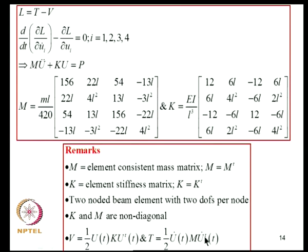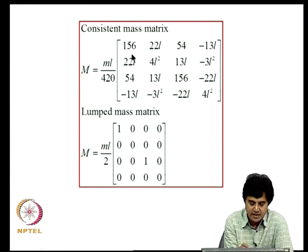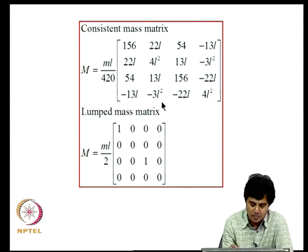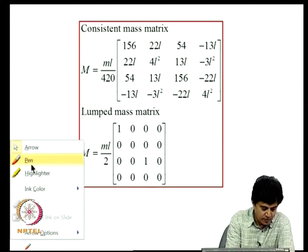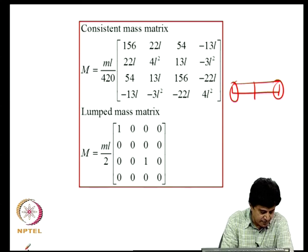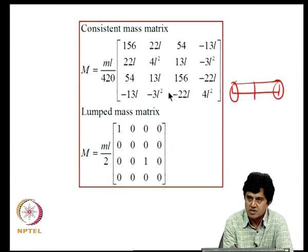We have now derived the mass and stiffness matrices for an Euler-Bernoulli beam element. This mass matrix is called the consistent mass matrix. There is another approach known as the lumped mass matrix: for a beam element, if half the total mass is lumped at each node, we get a diagonal mass matrix. This lumped mass matrix obviously does not account for the cross-coupling terms that are present in the consistent mass matrix.